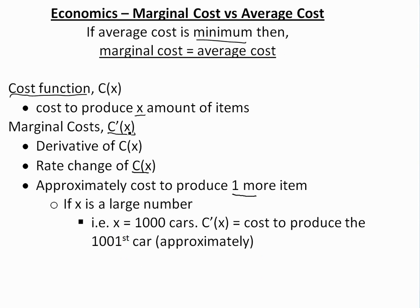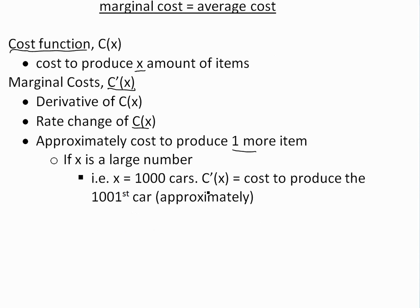Because the derivative is instantaneous — it's a limit as delta X goes to zero — but in real life we usually have real integers, so we can't have a fraction of an item. That's why you can approximate this, and it's more detailed in the marginal cost video. This is true if X is a large number. For example, if you're making 1,000 cars, the marginal cost is just the cost to produce the 1,001st car, and one car is very small compared to 1,000 cars.